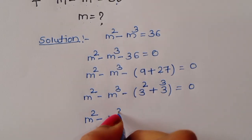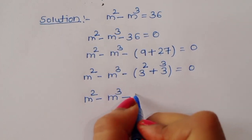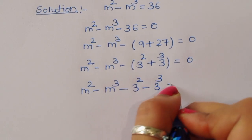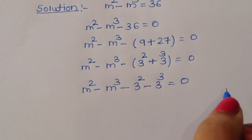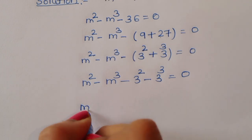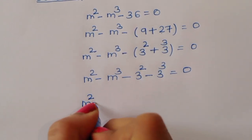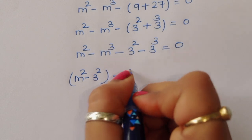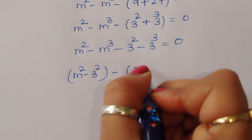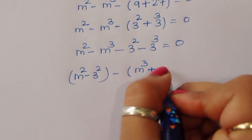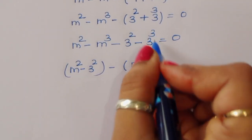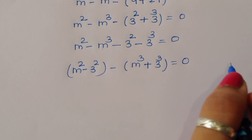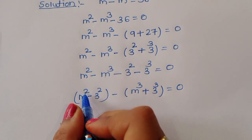So m squared minus m cubed minus 3 squared plus 3 cubed is equal to 0. Now we can arrange these terms as: m squared minus 3 squared, minus m cubed plus 3 cubed, which gives us m squared minus 3 squared plus m cubed plus 3 cubed is equal to 0. Wait, minus m cubed plus 3 cubed.